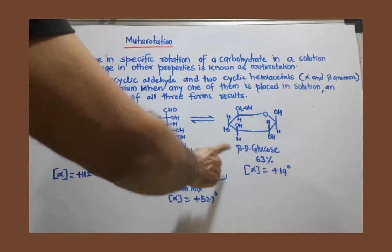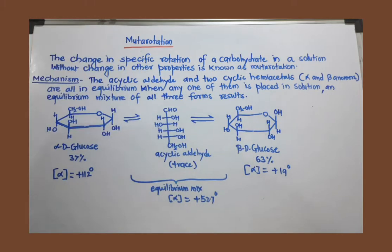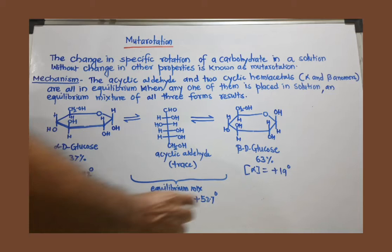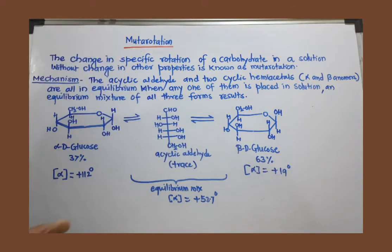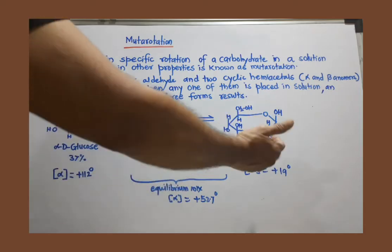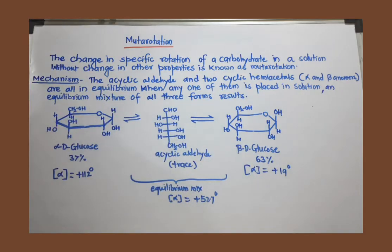For beta-D-glucose, if you keep it in aqueous solution and measure the rotation, you observe that initially it is +19 degrees, but very soon it increases to +52.7 degrees and remains constant.